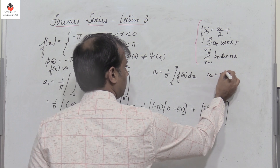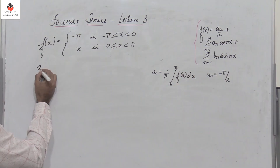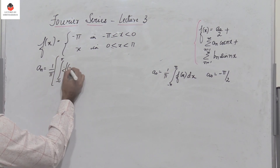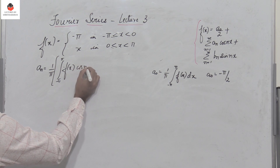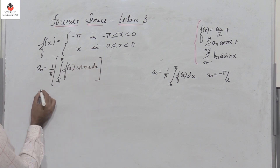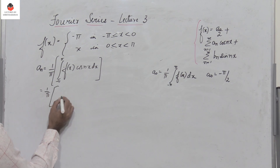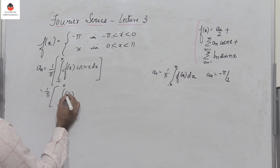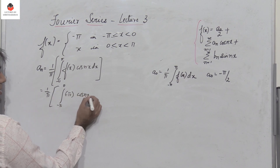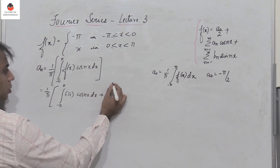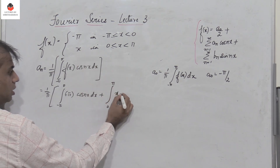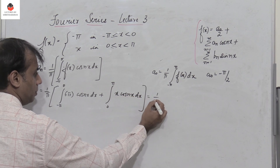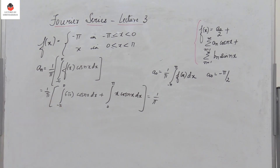Now aₙ equals one by pi times the integral from minus pi to pi of f(x) cos(nx) dx. This splits as: one by pi times the integral from minus pi to zero of minus pi cos(nx) dx, plus the integral from zero to pi of x cos(nx) dx. The minus pi can be taken outside the integral.